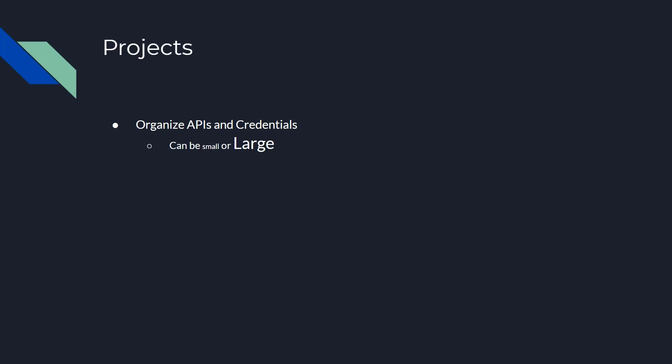Regardless of what you're doing, whether you're just provisioning a resource or using an API, everything uses APIs in the background. So you'll need to make sure that the project has all the access needed for all of the APIs. For instance, you can't provision a server without having the server provisioning APIs assigned to you.